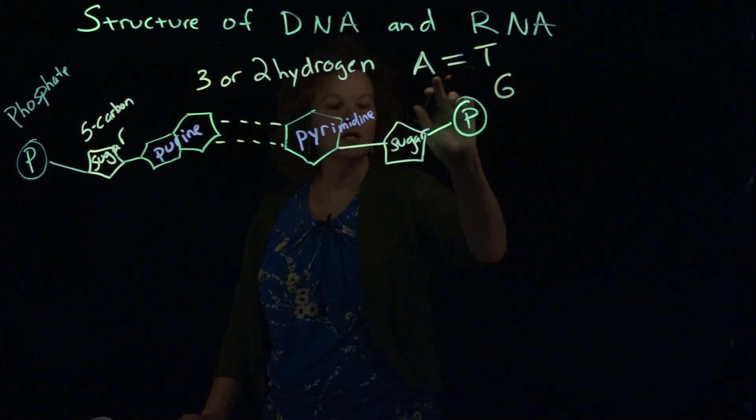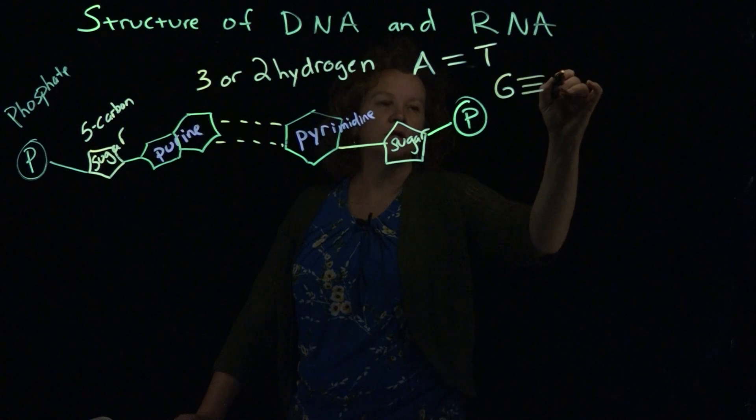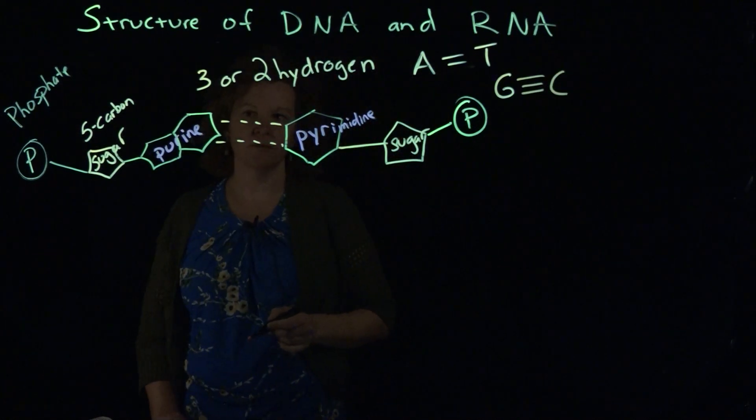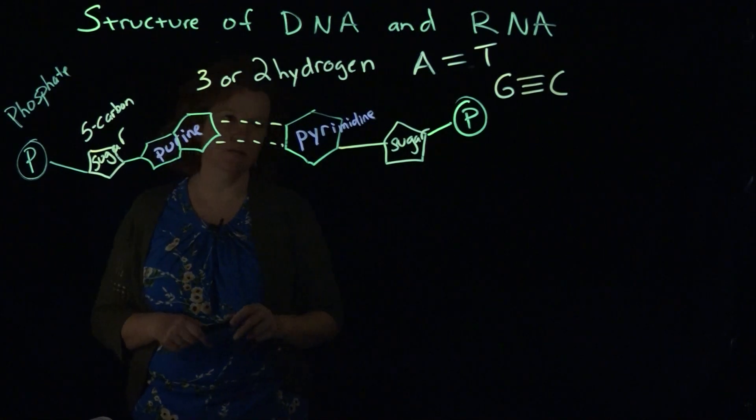Got that backwards. Adenine and thymine are held by two hydrogen bonds. Guanine and cytosine are held by three hydrogen bonds. So I just drew a two conformation here so that we could assume that's thymine and adenine based on that.